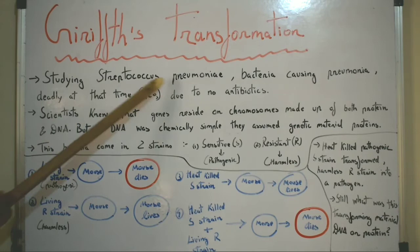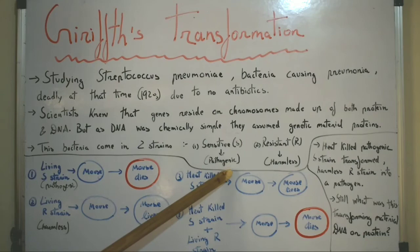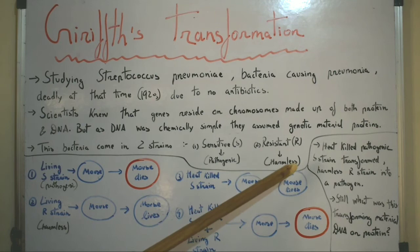The Streptococcus pneumoniae bacteria come in two strains. The first is the S strain, or smooth strain, which is a pathogenic strain that causes pneumonia. The second is the R strain, or rough strain, which is harmless and does not cause pneumonia.